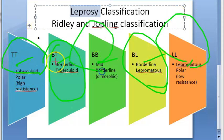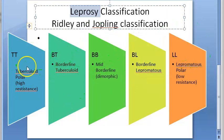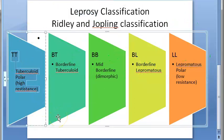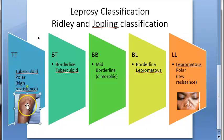So the full spectrum is TT, BT, BB, BL, LL. In tuberculoid leprosy, the skin lesions are single and few, asymmetrical, hypopigmented, and erythematous macules. There is distinct sensory impairment in tuberculoid leprosy.